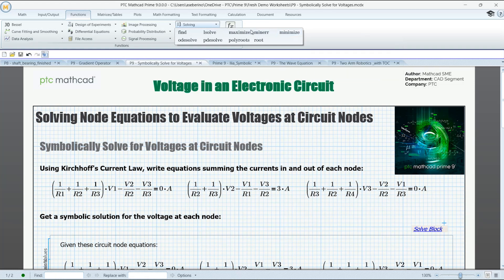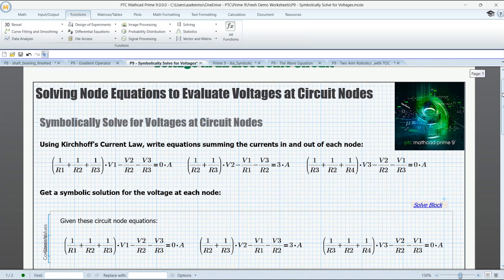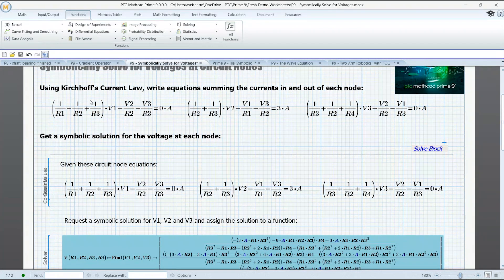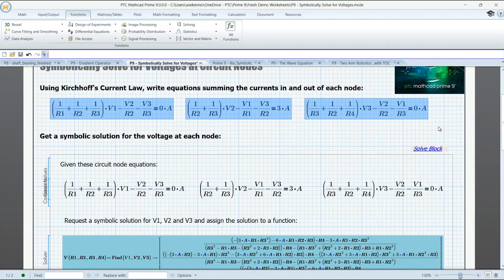So those are numeric functions for using a solve block numerically. What we're looking at now is a solve block where we're going to ask for a symbolic solution. So here we have a circuit, just assume we have a basic circuit, and we have three node voltage equations. And I'm going to draw a box around them so that we can see where one stops and the next one starts. So these are our three equations that sum the currents in and out of each node of this very simple circuit.